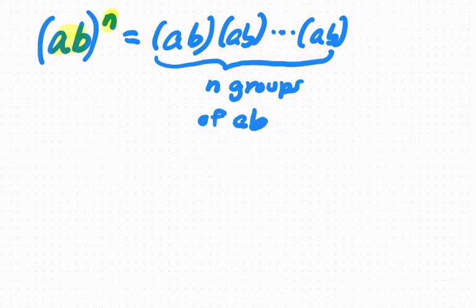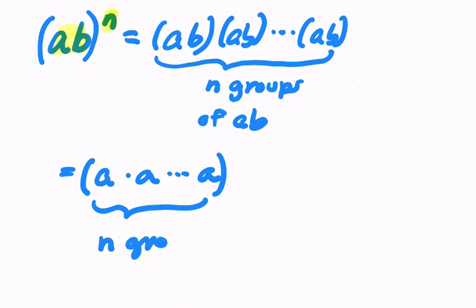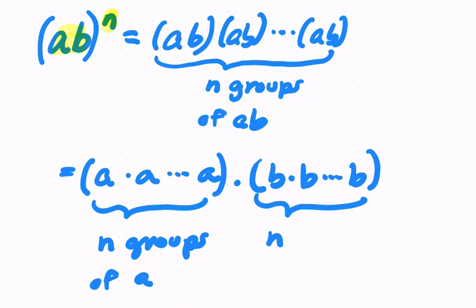Or you might say n factors, right? Because ab is a factor, as a product of two factors. So now we know our commutative and associative property says, well, if there are n groups of ab, then there are n groups of a up front: a times a, n times. That's our first group. So there are n groups of a. And then we're multiplying that by n groups of b.